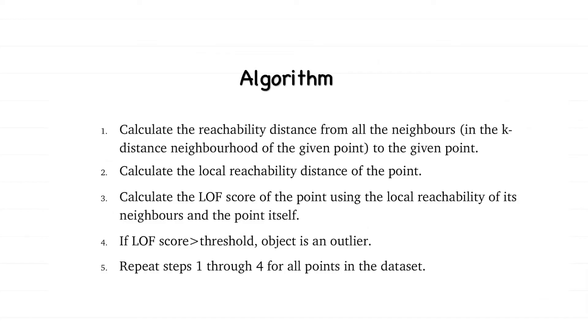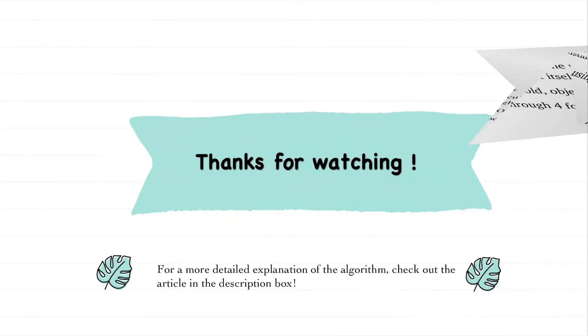Repeat the steps from one to four for every single point in the dataset, and at the end we know which points in the dataset are outliers and which are not. Thank you for watching. If you would like a more detailed explanation of the algorithm, please check the article in the description box.